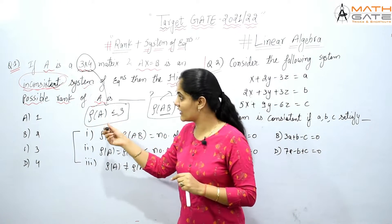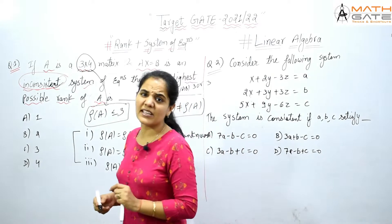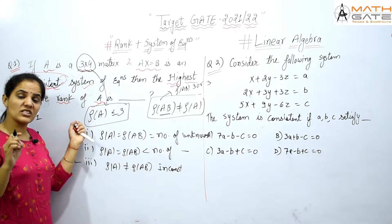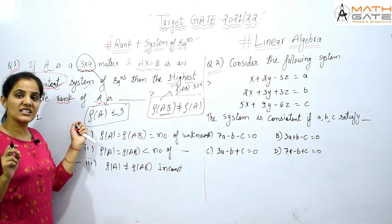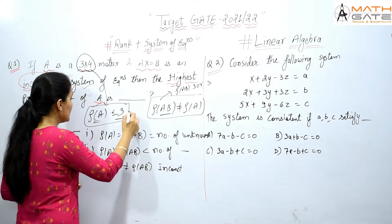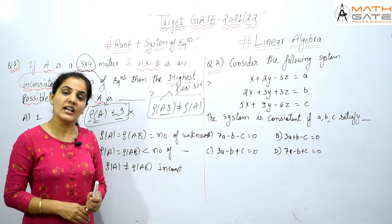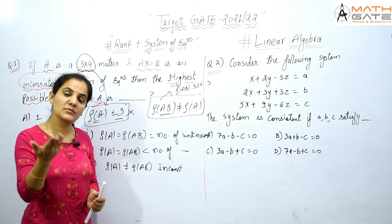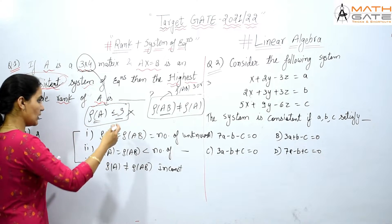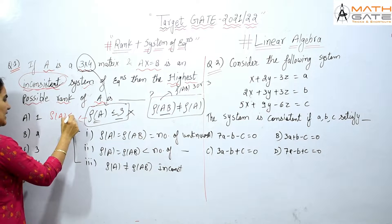Since the system is inconsistent, rank of A cannot equal rank of AB. If rank of A were 3, and rank of AB is also 3, then both ranks would be equal, which would make the system consistent — a contradiction of the question. So rank of A equal to 3 is not possible. This means the highest possible rank of A must be less than 3.